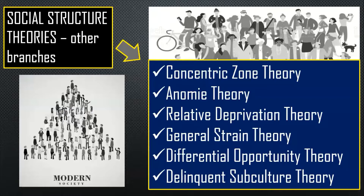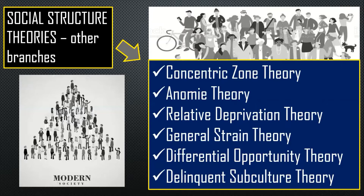Moving on, the social structure theories also have other branches: the concentric zone theory, the anomie theory, the relative deprivation theory, the general strain theory, the differential opportunity theory, and the delinquent subculture theory. There are many sub-structures under sociological theories — in fact, not all are mentioned in your syllabus. There are many more embedded sub-theories in our subject, which is why this subject is difficult to understand if you only read and research on your own.